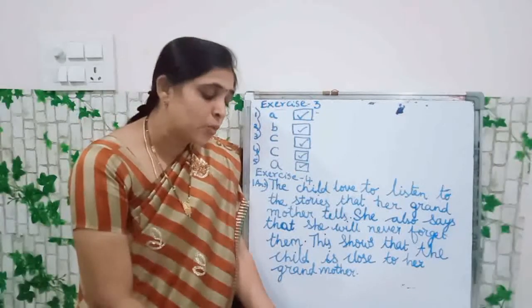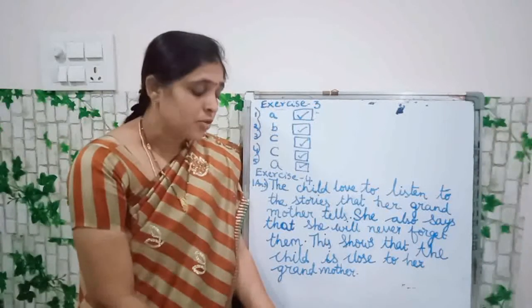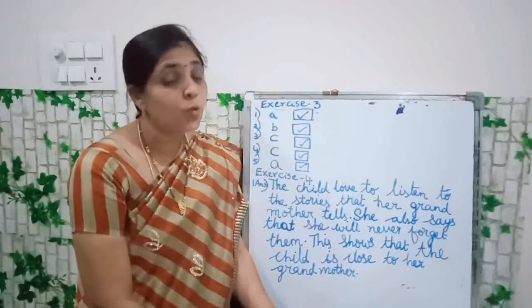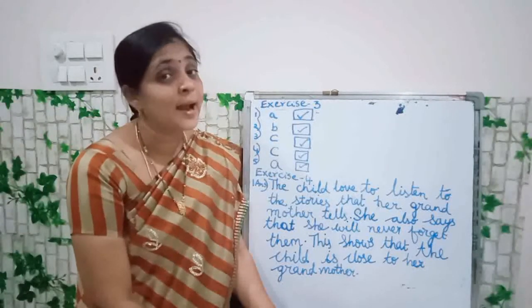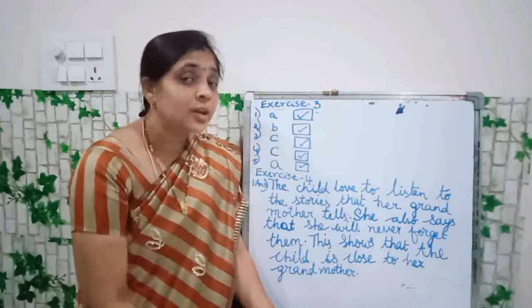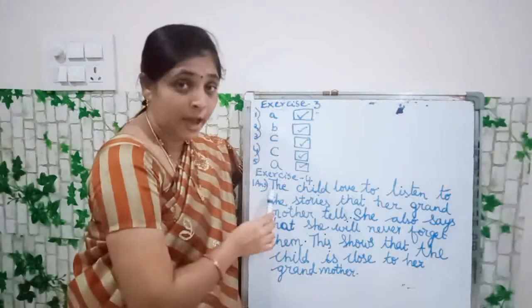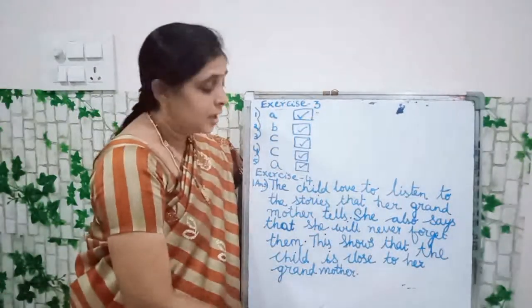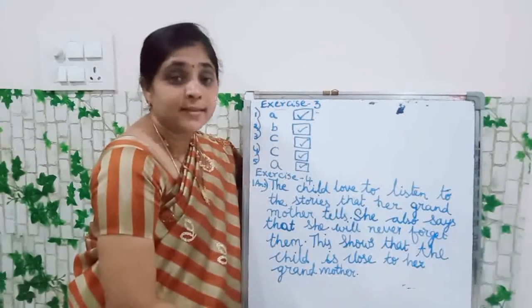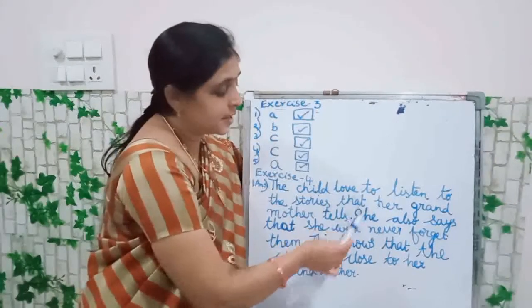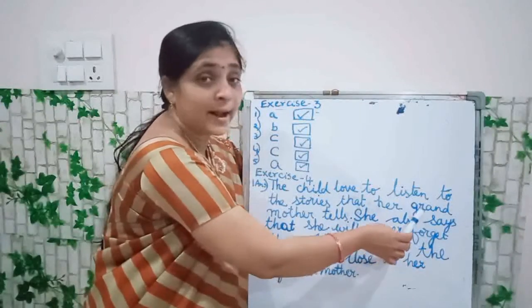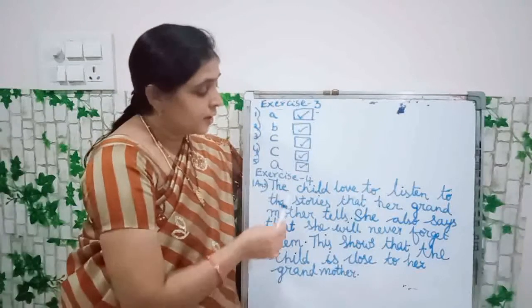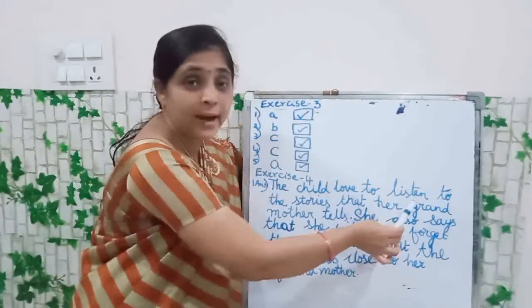Exercise 4 — Value Based Questions, Judgment and Appreciation. First question: Do you think that the child is close to her grandmother? Why? Look at the board. The child loved to listen to the stories that her grandmother tells. The child loved to listen to the stories that her grandmother tells.